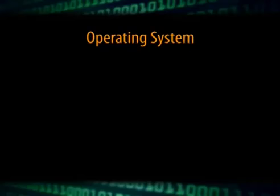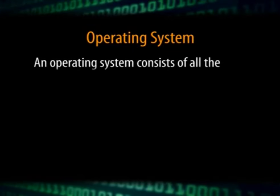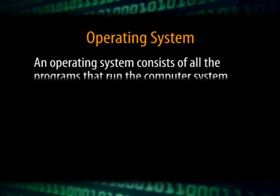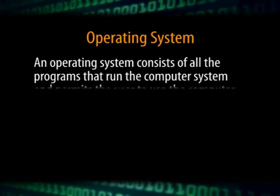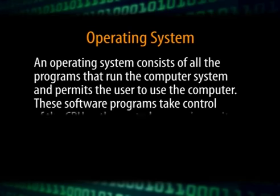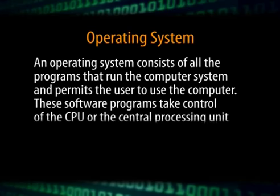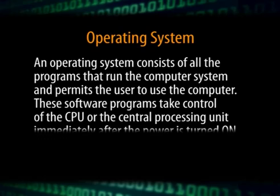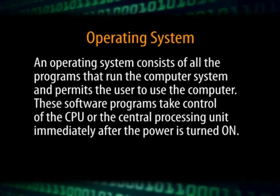An operating system consists of all the programs that run the computer system and permits the user to use the computer. These software programs take control of the CPU, that is the central processing unit, immediately after the power is turned on.